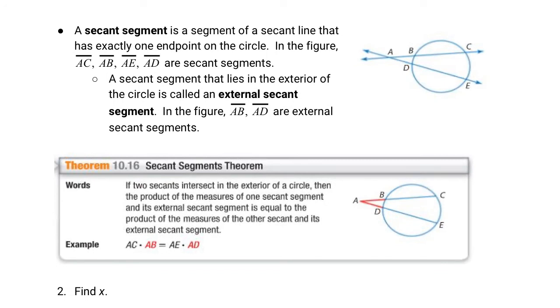Onward and upward. Now we're going to look at a secant segment. It's a segment of a secant line that has exactly one end point on the circle. In this figure, AC, AB, one end point on the circle, AE, one end point, and AD. Those are all secant segments. A secant segment that lies in the exterior of the circle is called an external secant, like AB and AD, one end point on the circle. Just a segment, not a complete line.